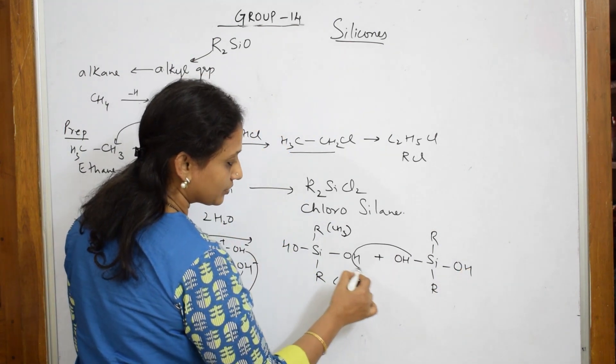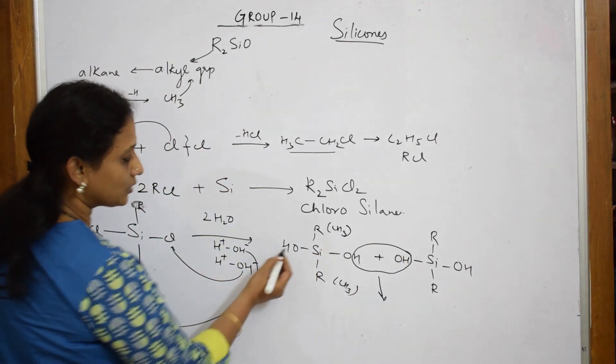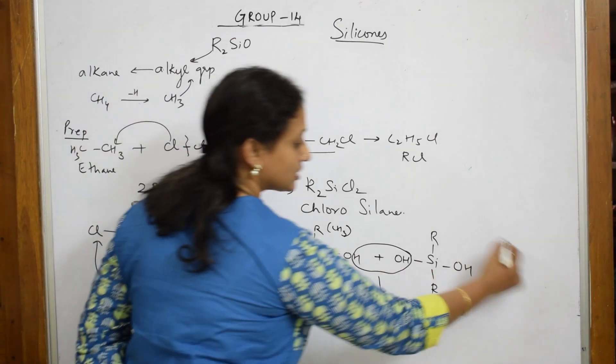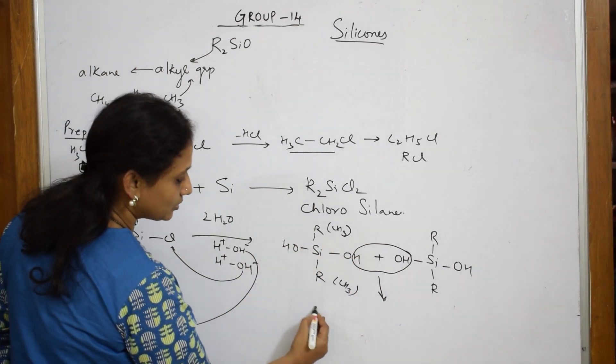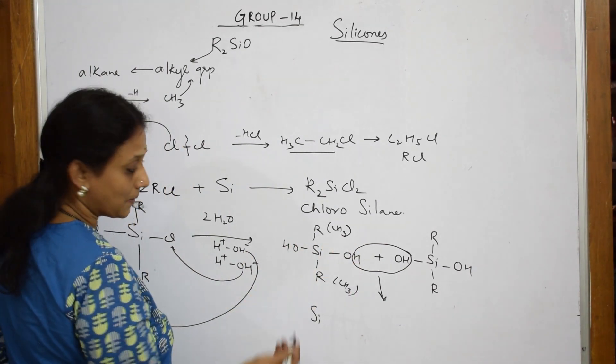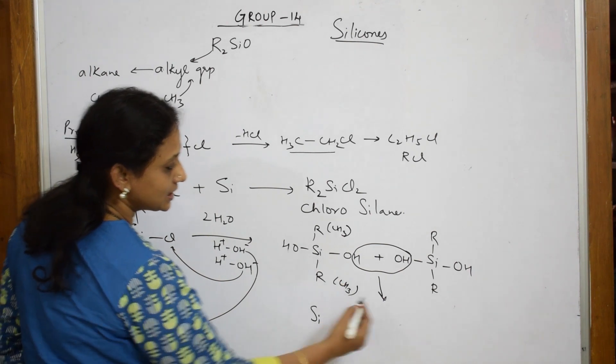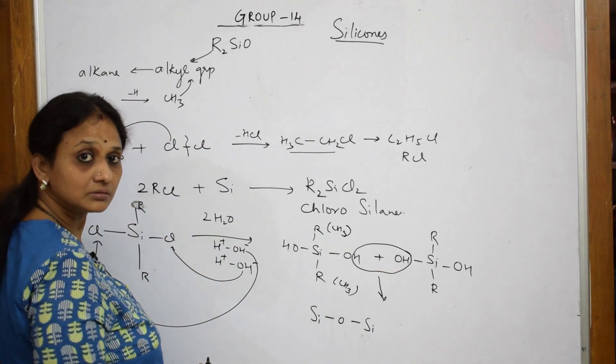Now, take out water molecule from here. What do I get? I get a compound. Now, here also, this side also, water molecule gets condensed. This side also, water molecule just gets condensed. What will be left with? You will be left with Si. This Si and this Si are linked with oxygen, correct?